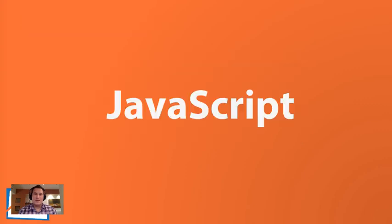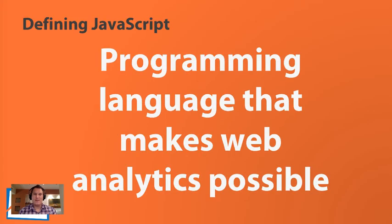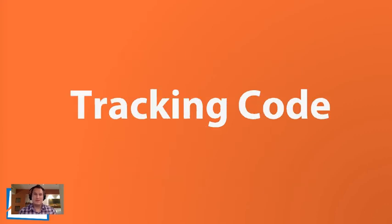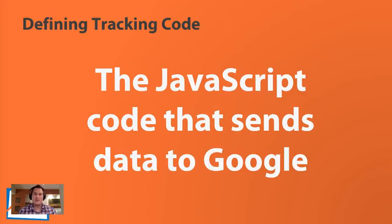We also talked in the first video about JavaScript. JavaScript is the technology that basically makes web analytics possible — it's a piece of technology that works on the browser or the client side, and we use that JavaScript technology to send data into our different programs. That's how a website knows that somebody came to the website and how somebody was tracked. Specifically within JavaScript, we have tracking codes — you might have heard about an analytics tracking code before.